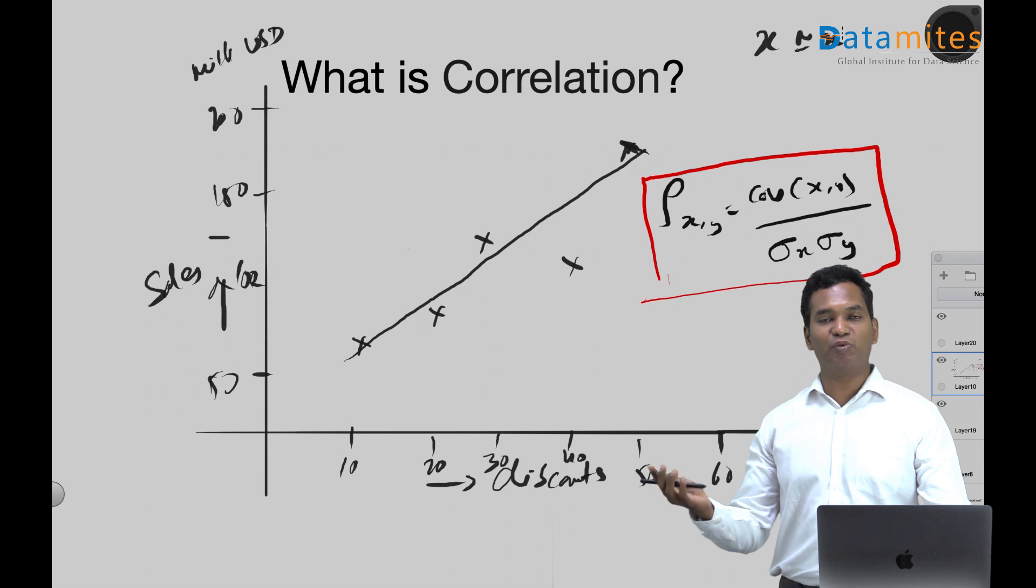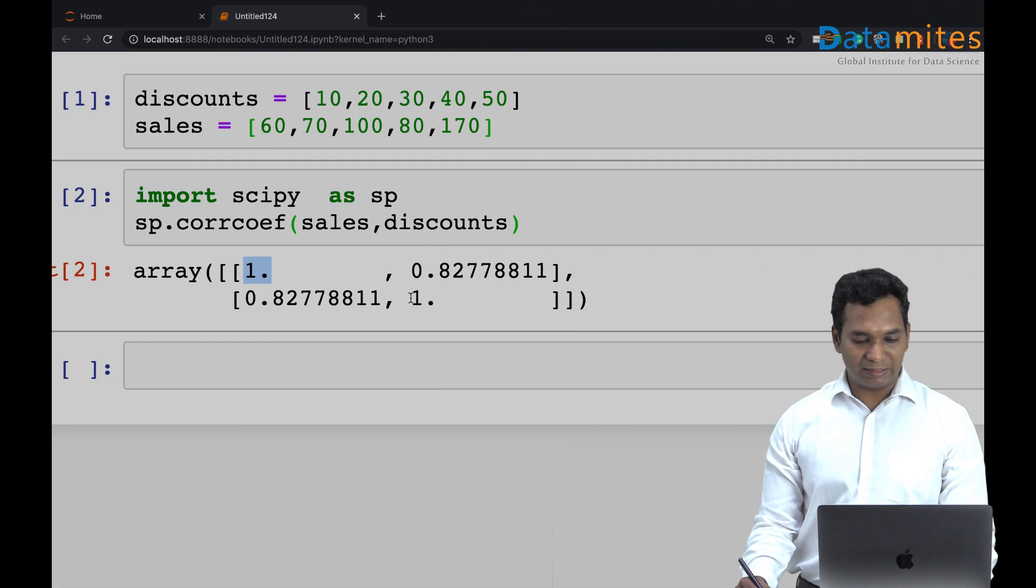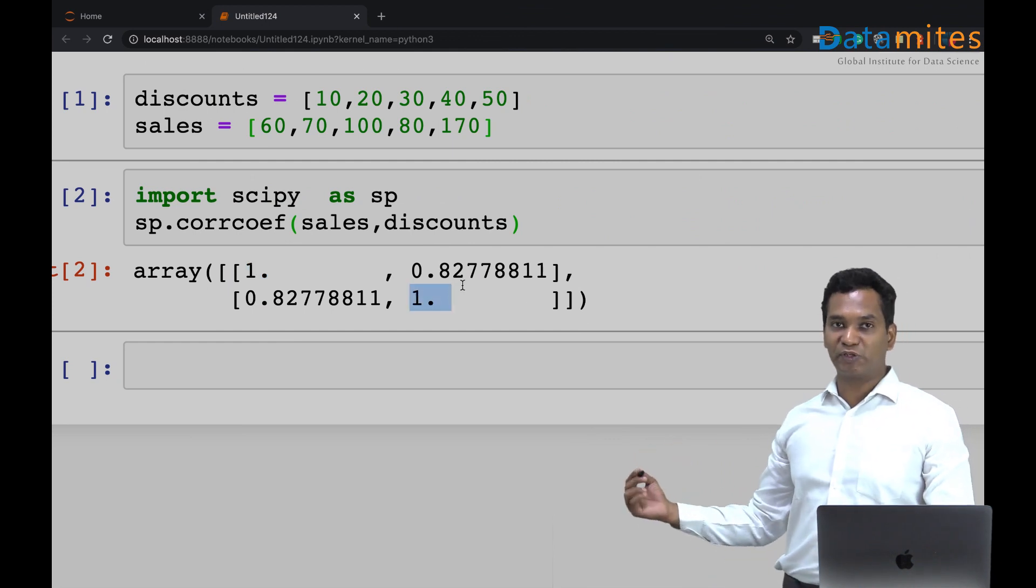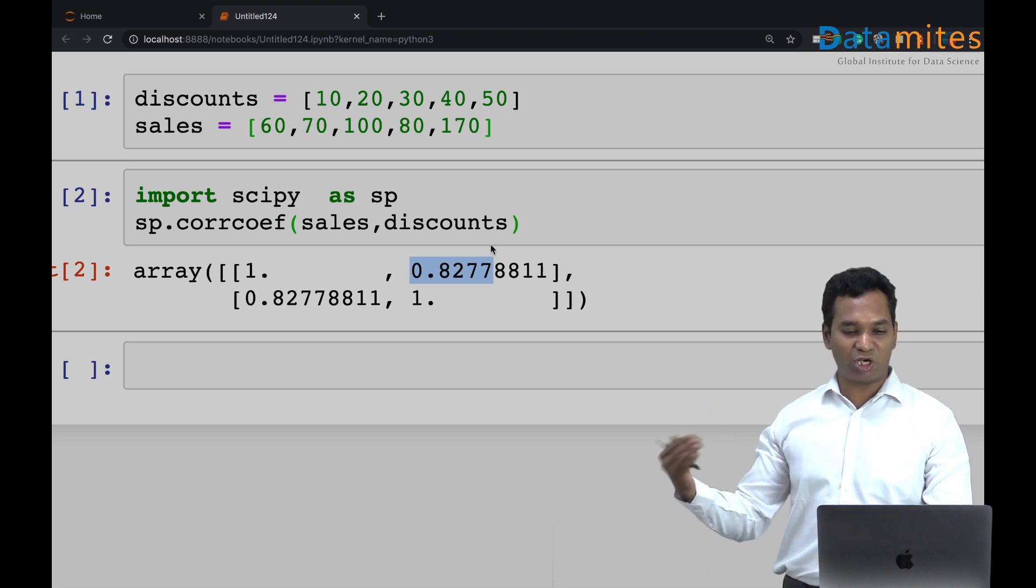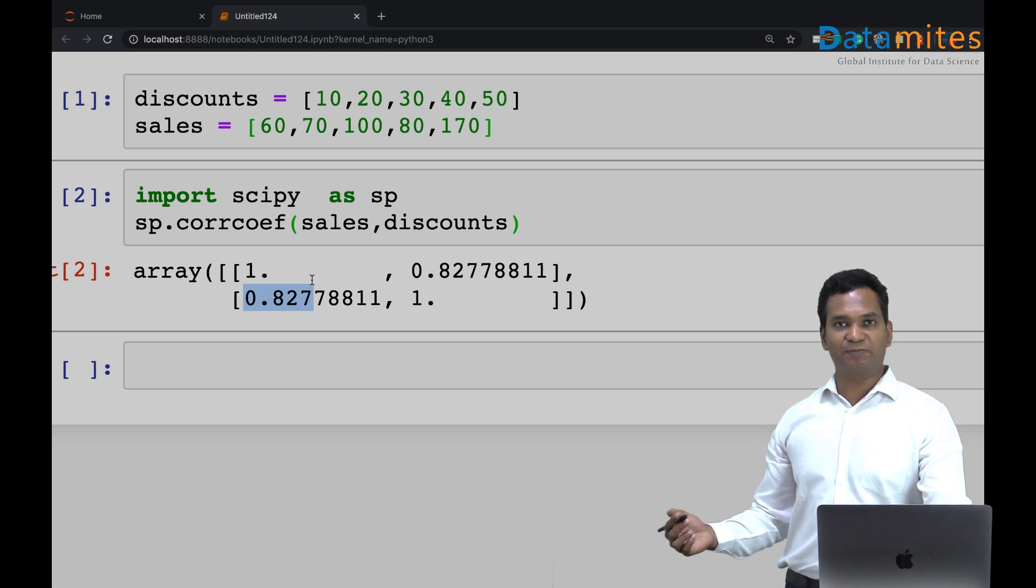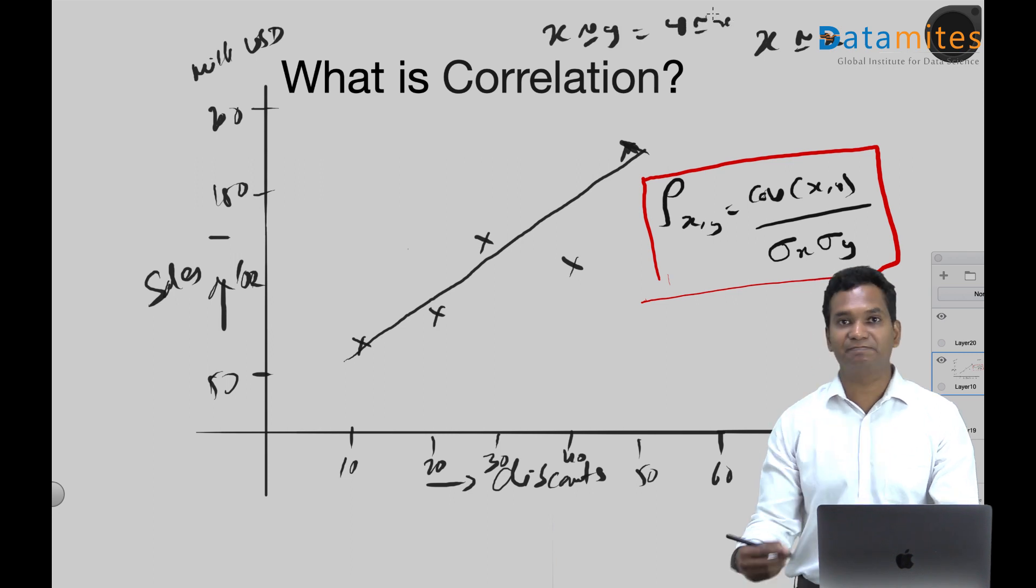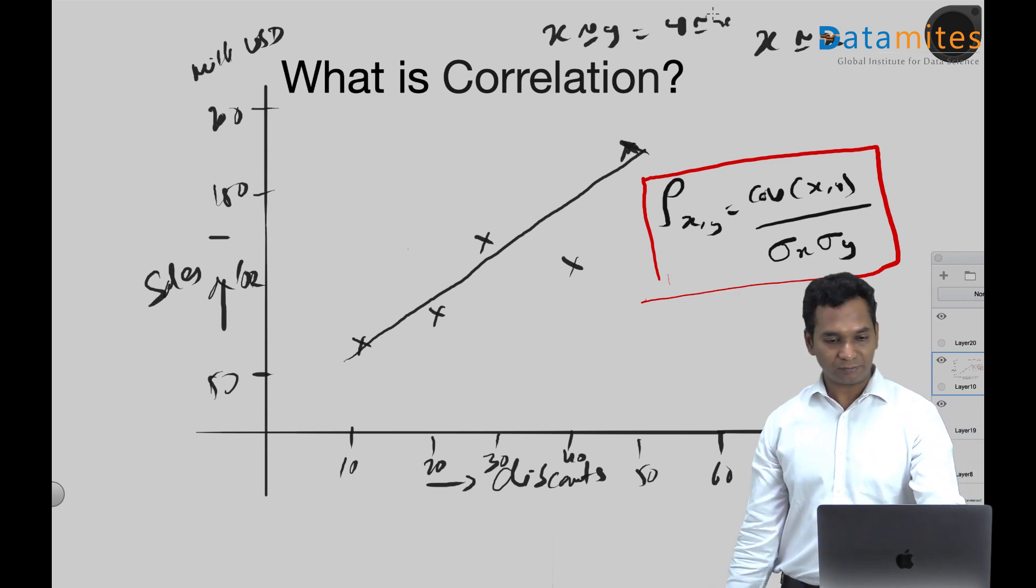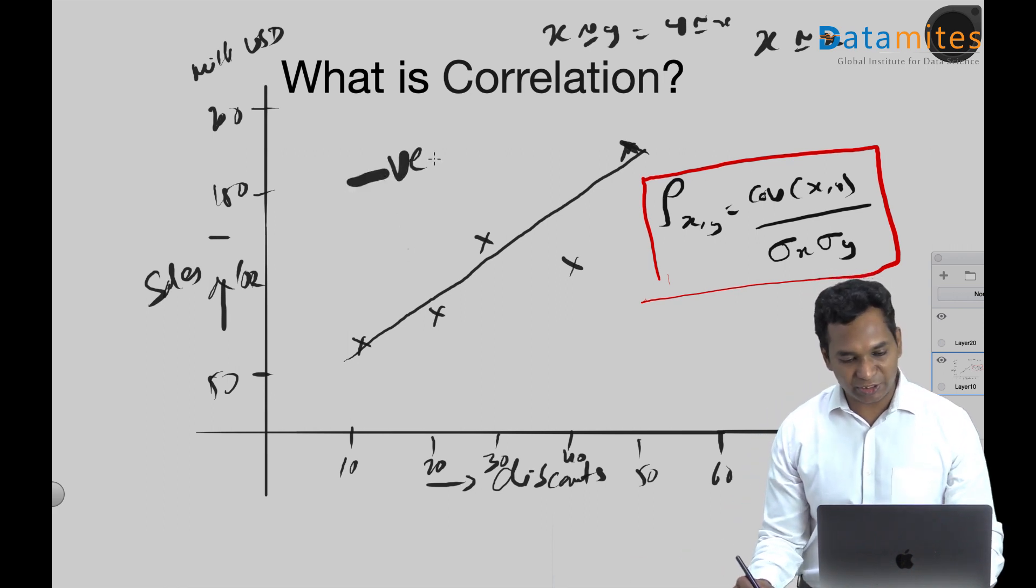So x with x itself will give you one. Similar manner, discounts with discounts itself also gives you one. And this 0.82 represents sales correlation with the discounts, remains same for discounts correlation. So which means x correlation with y is exactly same as y correlation with x, because that's all it is. This is a correlation, and this is actually positive correlation.